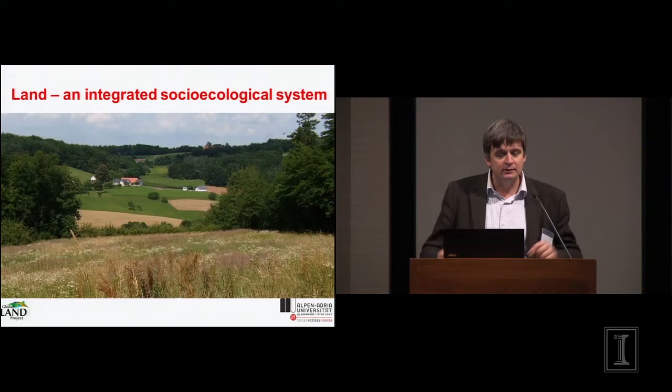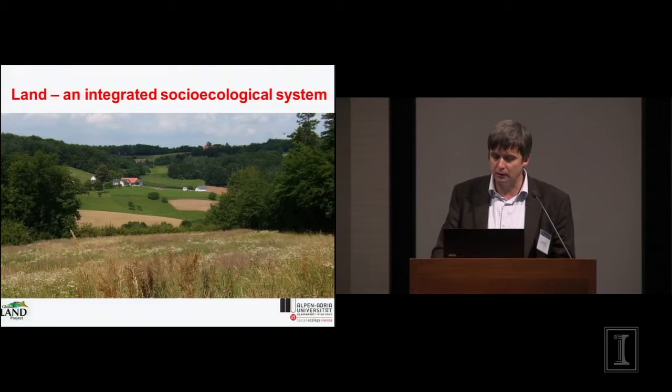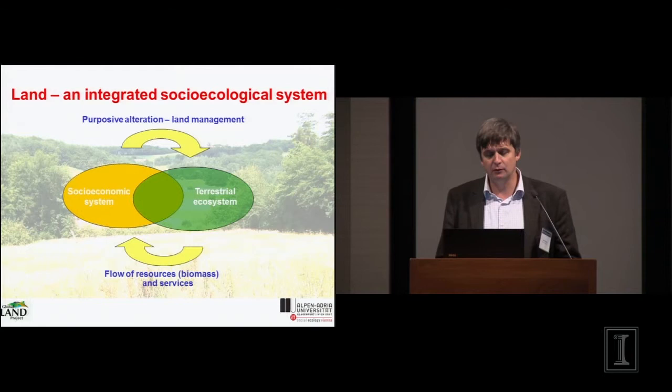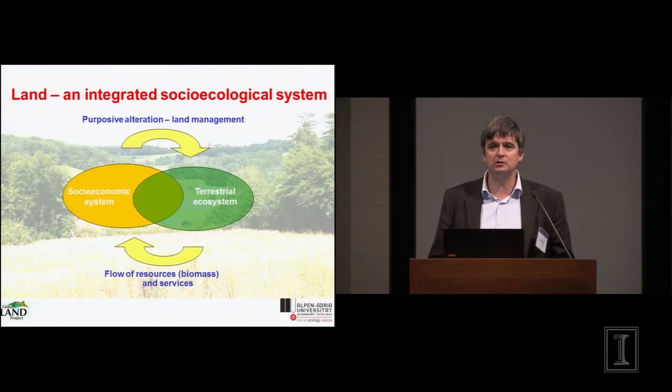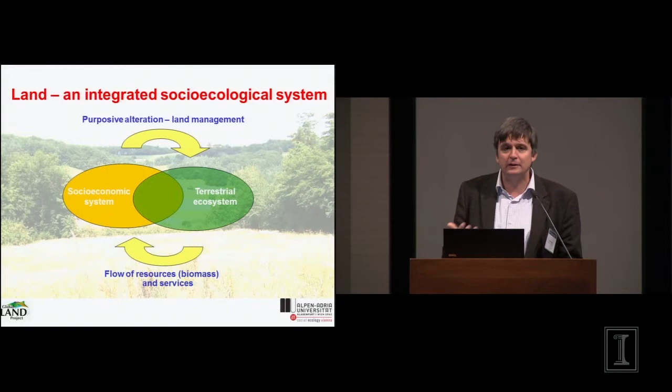This is nothing very new, and it has been underlying the Global Land Project: the idea that land is an integrated socio-ecological system where humans purposefully change the land in order to get a certain return in terms of resources like biomass — agricultural or forestry biomass — or services. Many ecosystem services are not just something ecosystems deliver on their own, but they deliver it because humans change or manage the land. HANPP is one indicator to describe what's going on in biophysical terms.